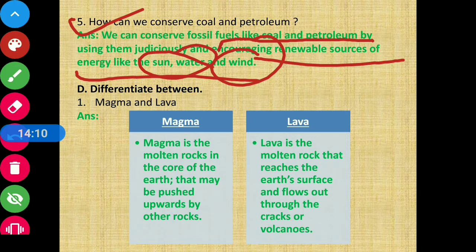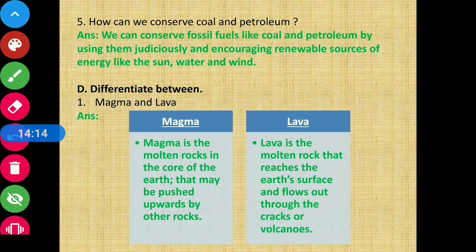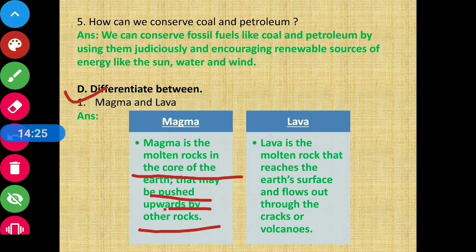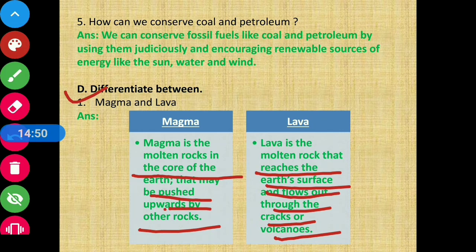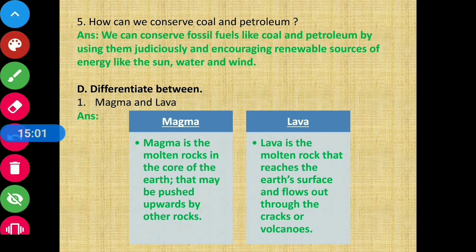Section D: Differentiate between. First: Magma vs Lava. Magma is the molten rock in the core of the earth that may be pushed upward by other rocks. Lava is the molten rock that reaches the earth's surface and flows out through the cracks or volcanoes. This is the difference between magma and lava.